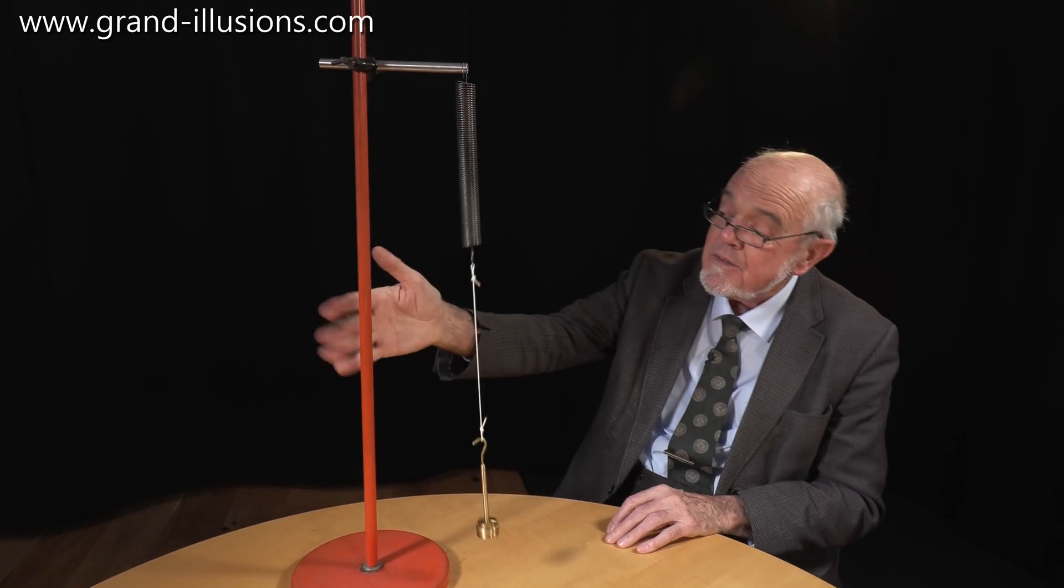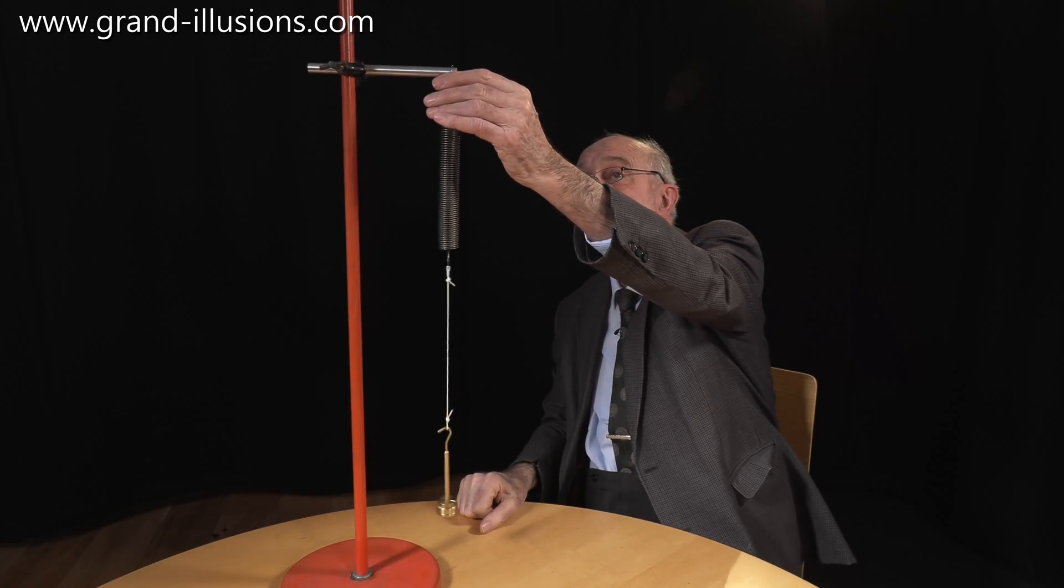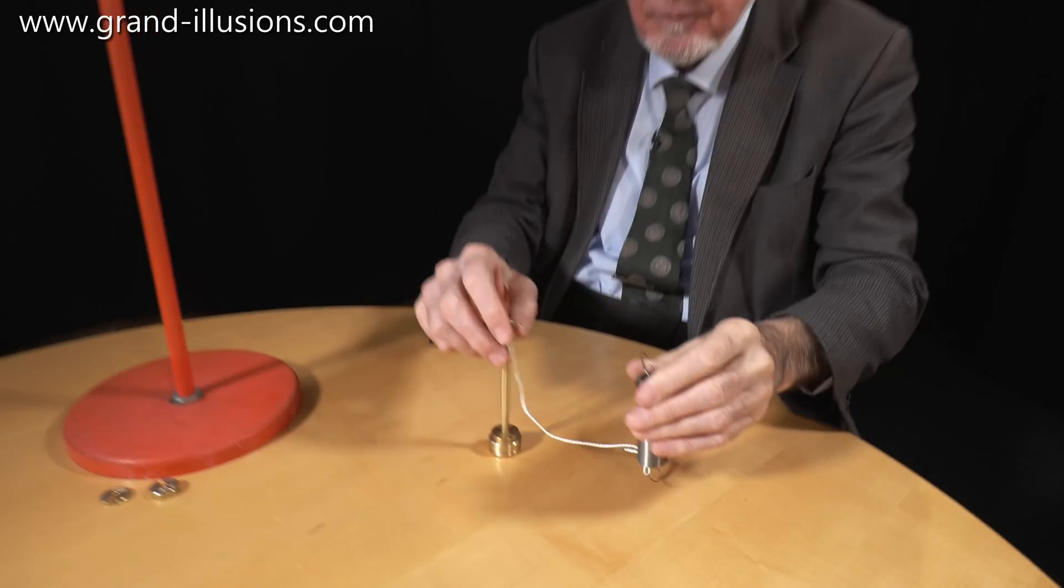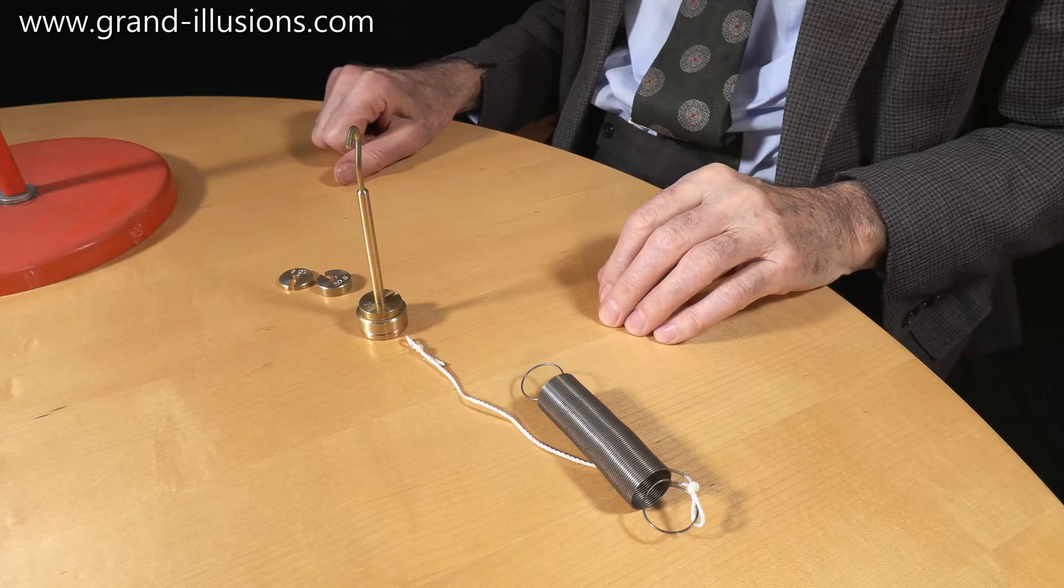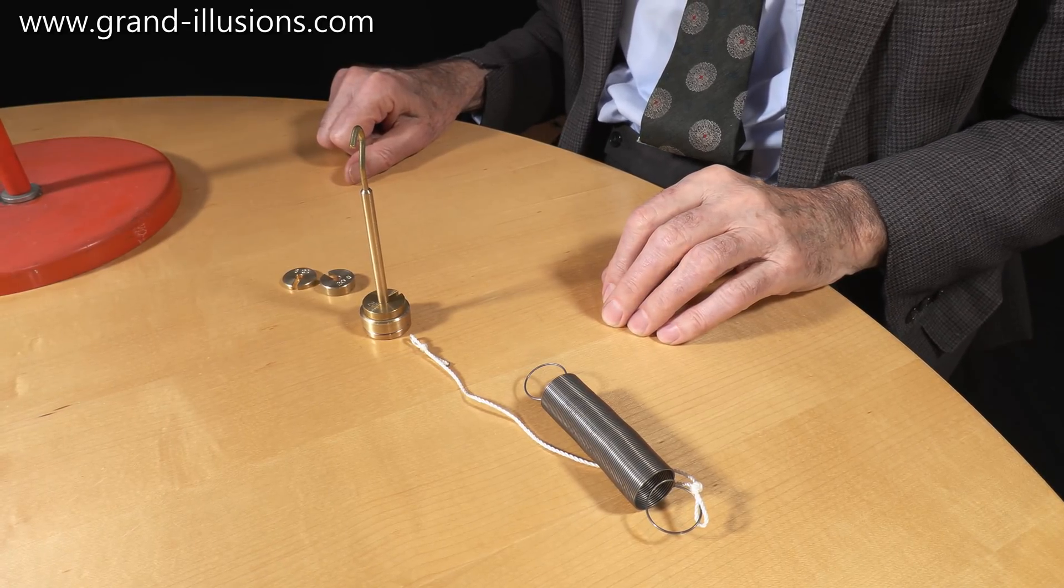So we don't provide the stand. This is an old lamp stand that we use for ours. You have to provide that yourself, but the rest of it, consisting of a spring and a string, and a weight, and we add in a few extra weights as well, and lots and lots of time for you to experiment and find perhaps something else about it.